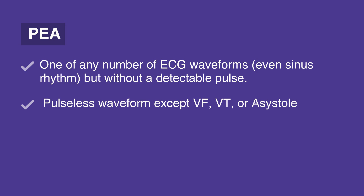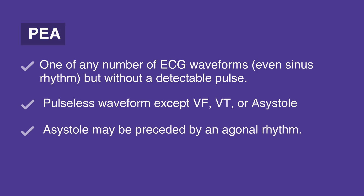Asystole may be preceded by an agonal rhythm. An agonal rhythm is a waveform that is roughly similar to a normal waveform, but occurs intermittently, slowly, and without a pulse.